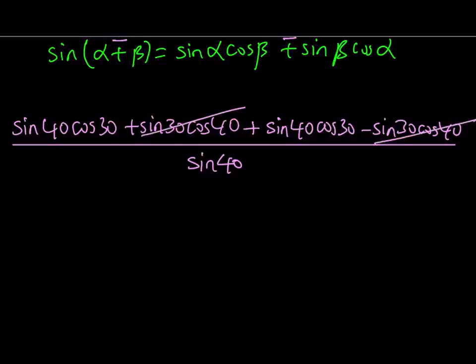And then on top, we have the sin 40 cos 30 twice. So we can write it as 2 sin 40 cos 30. And at the bottom, we're going to get sin 40.